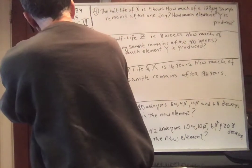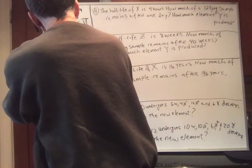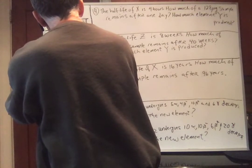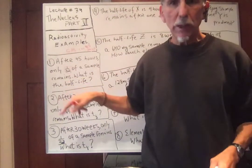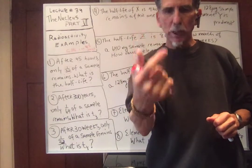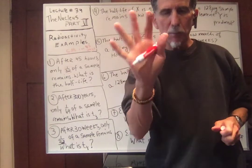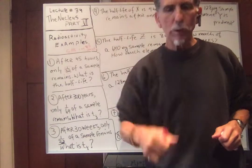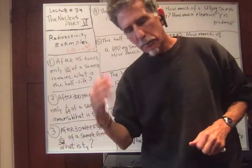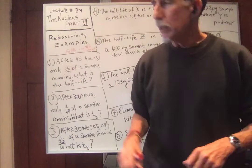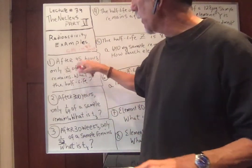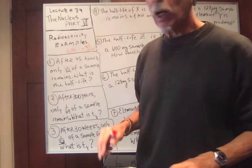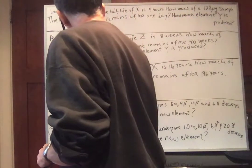So we have 5 half-lives in 45 hours. 5 decays in 45 hours means 1 decay — the half-life — is 45 divided by 5, which is 9 hours. So 9 hours is the answer.